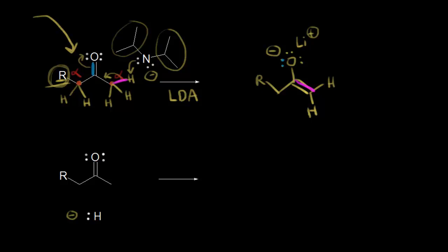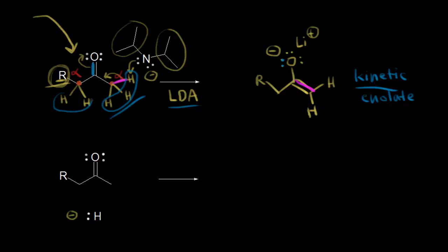This is the kinetic enolate. It's called the kinetic enolate because it's the one that forms the fastest — think about kinetic and speed. It forms fastest both because of our choice of base LDA and because of probability: on the alpha carbon on the right we had three alpha protons, so there's a greater chance of taking one of those compared to the two on the left. The kinetic enolate is the one that forms the fastest.